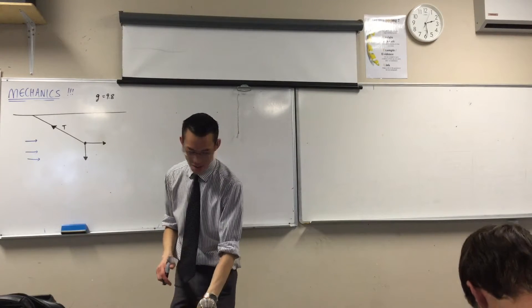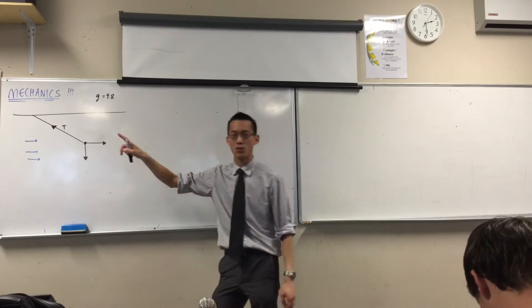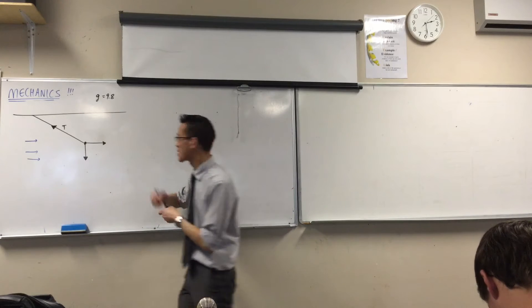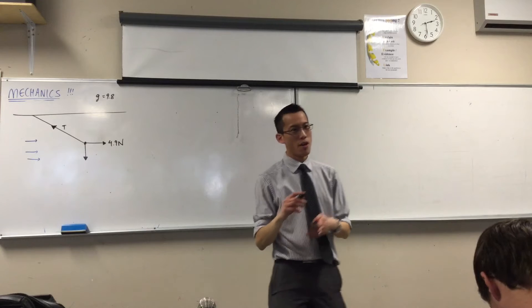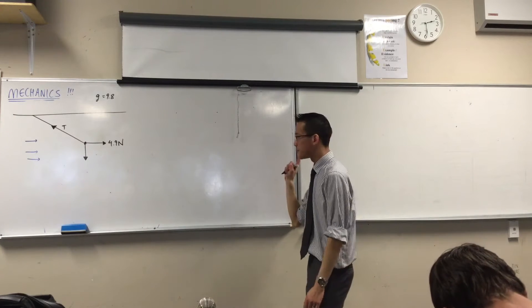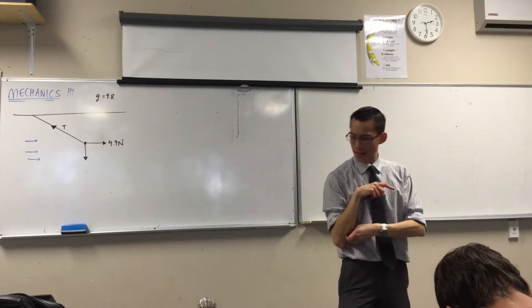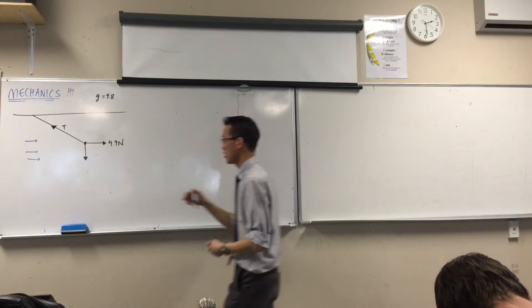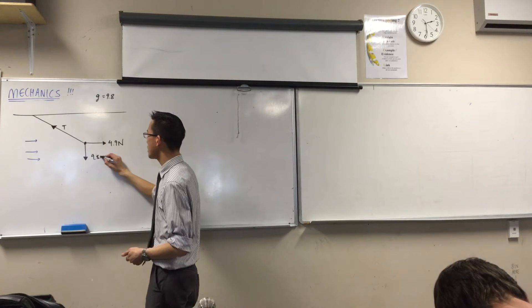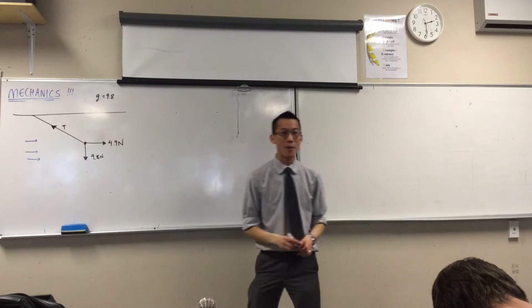They tell you that the wind is exerting that force of 4.9 newtons. So 4.9 newtons are going that way. You also know, I think they tell you, mass 1 kilogram, right? One kilogram? So you've got 9.8 newtons going that way.